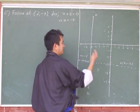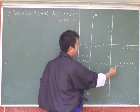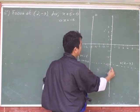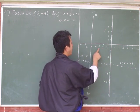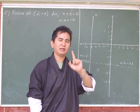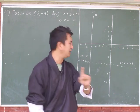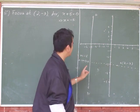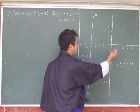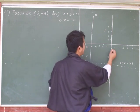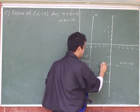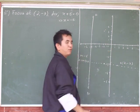Now we need to find the vertex. Start counting the units between the directrix and the focus. Counting: one, two, three, four, five, six, seven — we have seven units. The vertex always lies in the middle of the focus and the directrix, so seven divided by two gives us three point five.